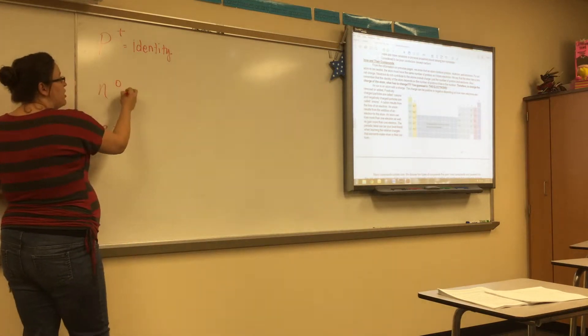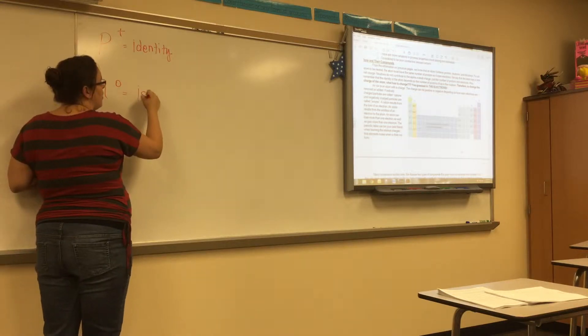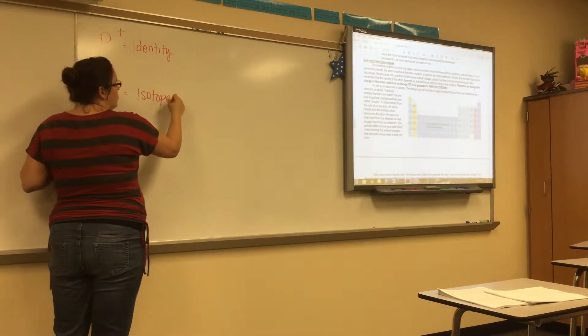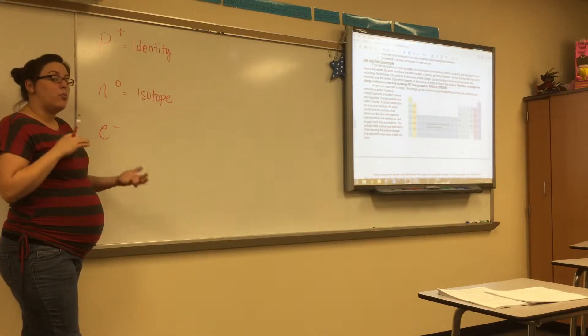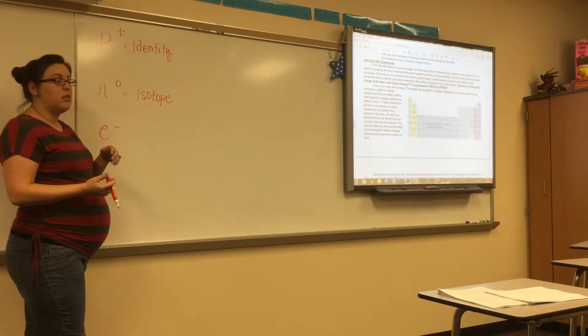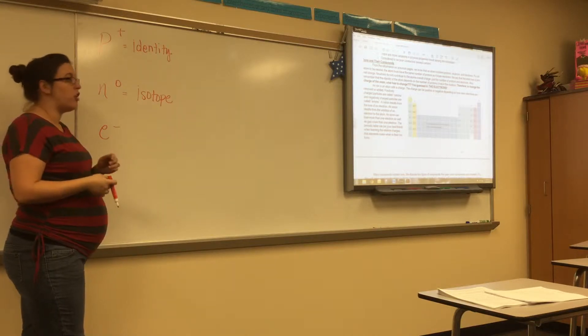We know that if we change the number of neutrons, that is what happens when we have isotopes. But, and then up until now, all of our protons and electrons have been neutral, right? Well, we've gotten a neutral charge.